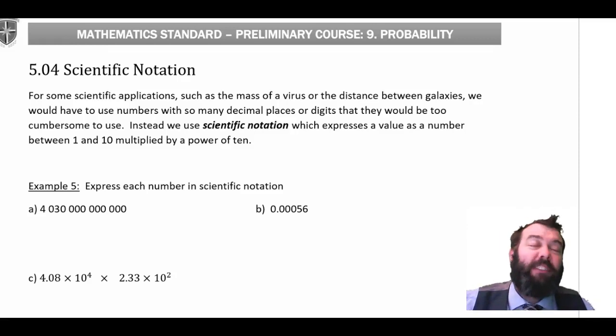On the other hand, we could have negative indices. So I might have, let's say, 4.5 times 10 to the negative 2. That means to divide it by 100, which gives you 0.045. It saves us using so many zeros. Really, that's what scientific notation is for.